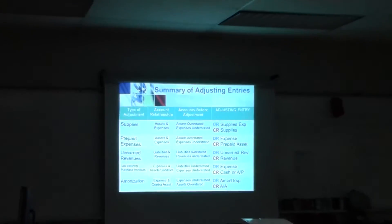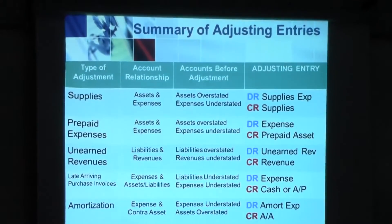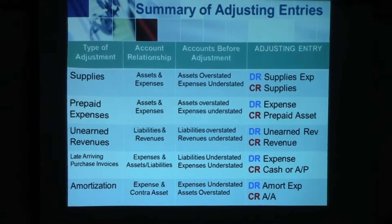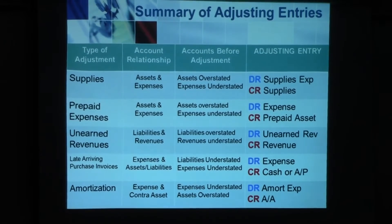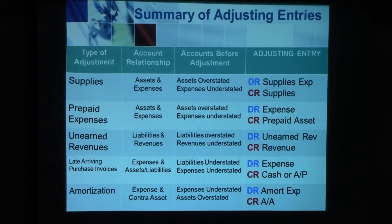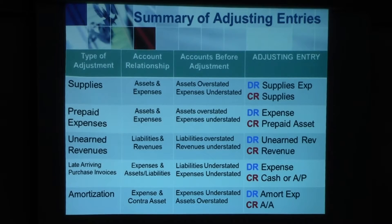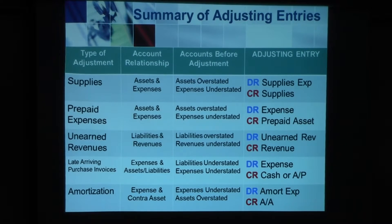There are five types of adjusting entries that we have learned in this course. And they are: supplies, pre-paid expenses, unearned revenues, late-arriving purchase invoices, and amortization. It's important that you really understand and remember the journal entries that go along with all of these adjusting entries.